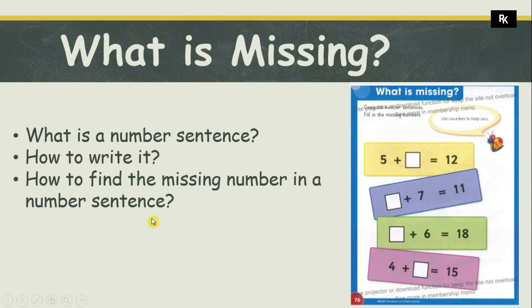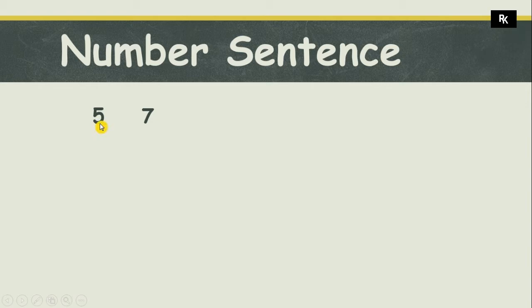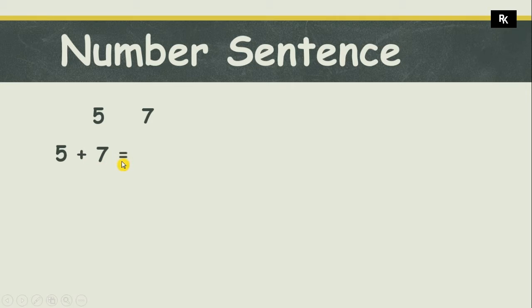Let's move to the lesson. Here I have two numbers, five and seven, and I want to add them. I will write five, then plus, then seven, and next I will put a symbol that is called equal. This is my number sentence, but it is incomplete because I haven't added five and seven.